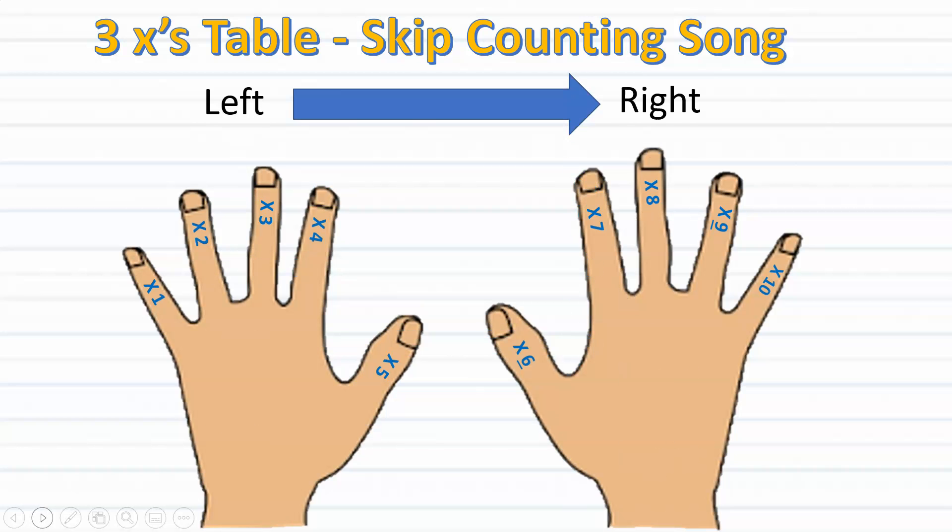As we can see in this picture the pinky on the left is one, ring finger two, middle finger three, pointer finger four, thumb five, thumb on the right six, followed by seven, eight, nine, and ten. Keep in mind that since this skip counting song focuses on factors one through nine only, we won't be using the tenth pinky finger.